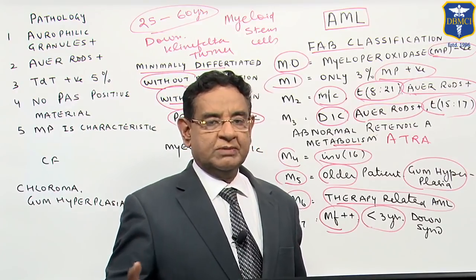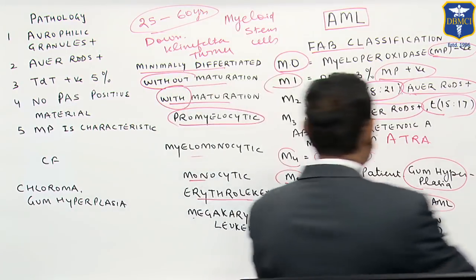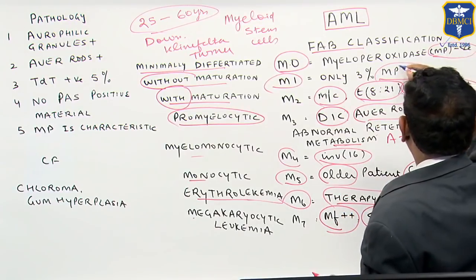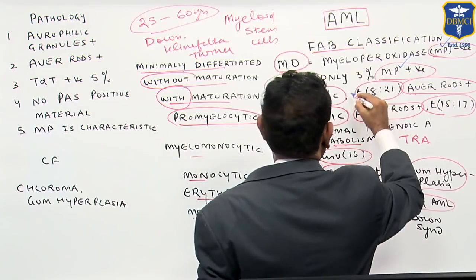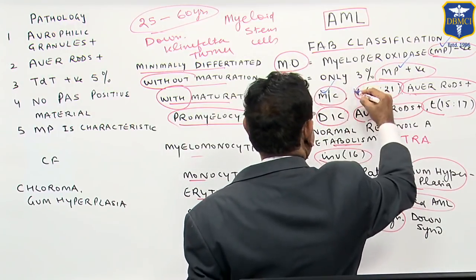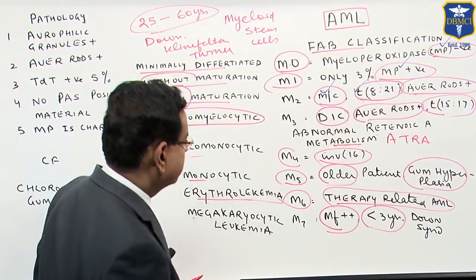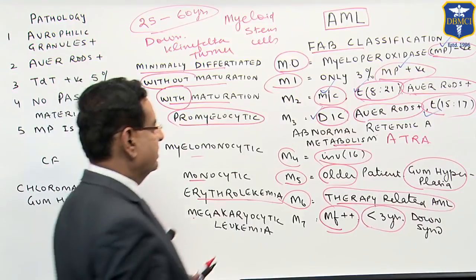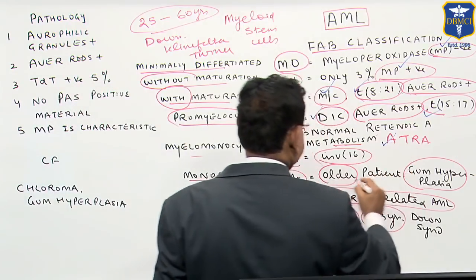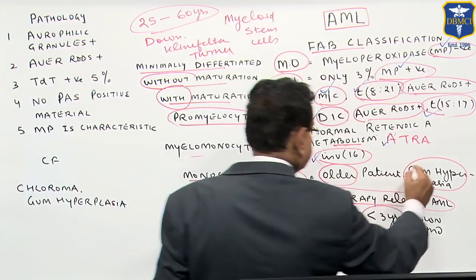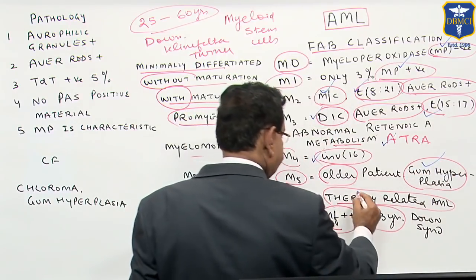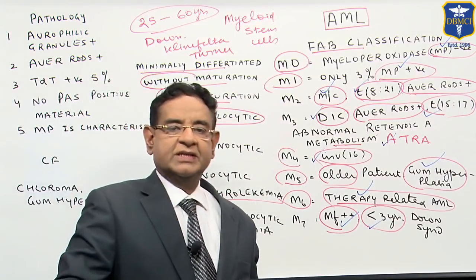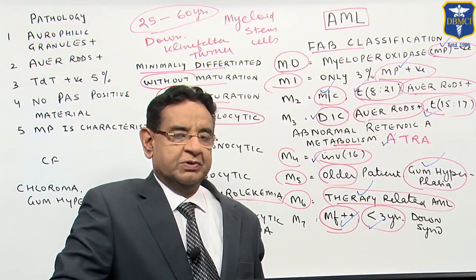The main highlights of the classification table are: M0 is myeloperoxidase negative; M1 has 3 percent myeloperoxidase positive; M2 is the most common with t(8;21); M3 has DIC, Auer rods, t(15;17), and is treated with ATRA; M4 has inv(16); M5 has gum hyperplasia; M6 is therapy-related; M7 has myelofibrosis and occurs in children. These are the important points you should remember.